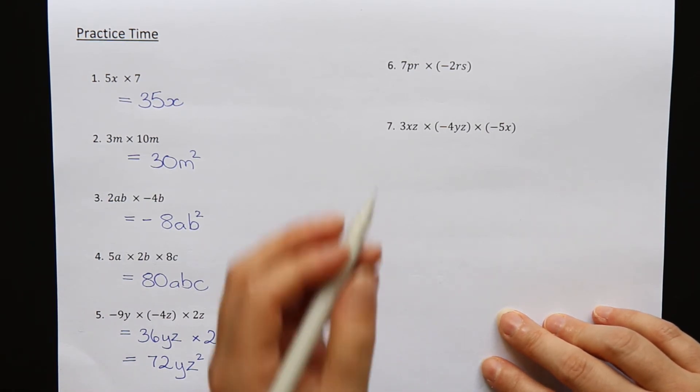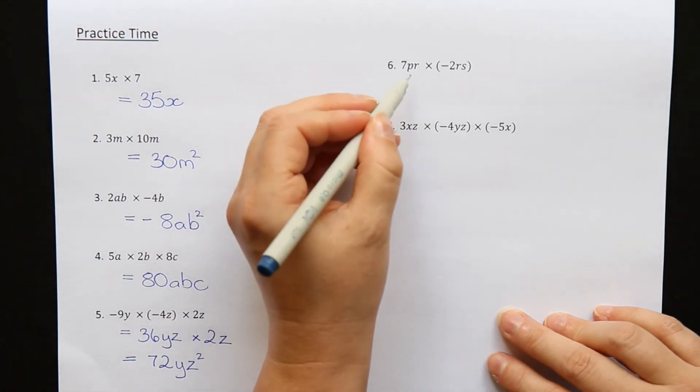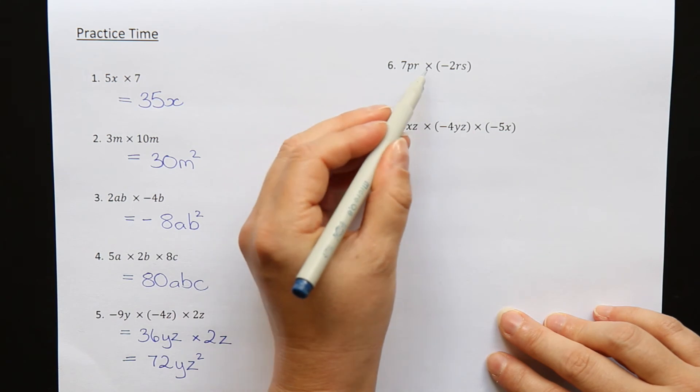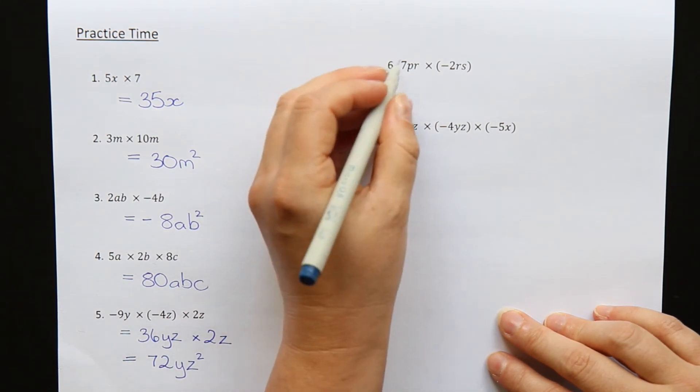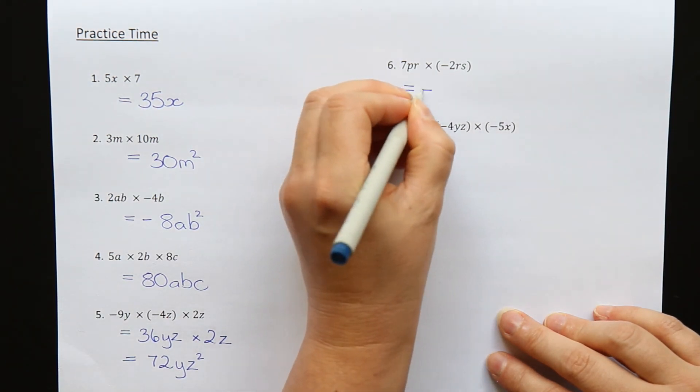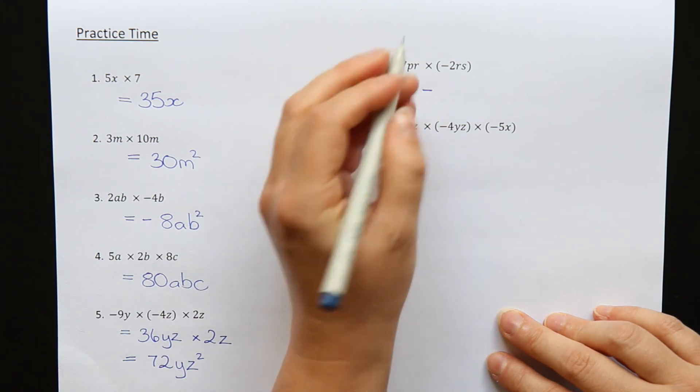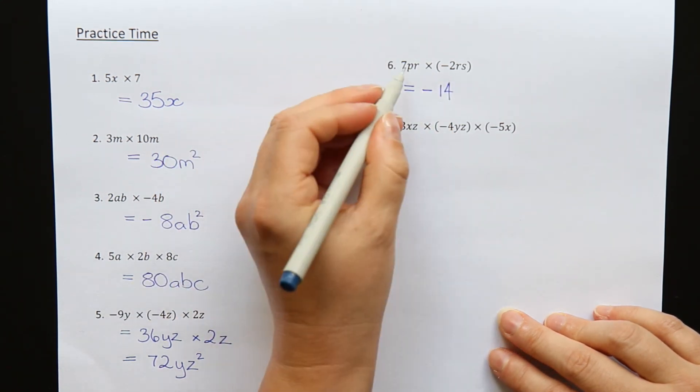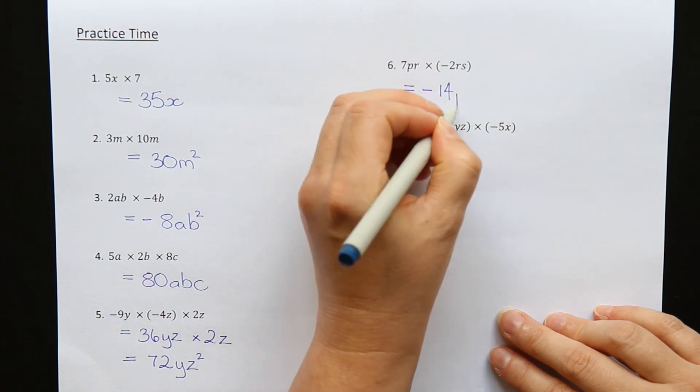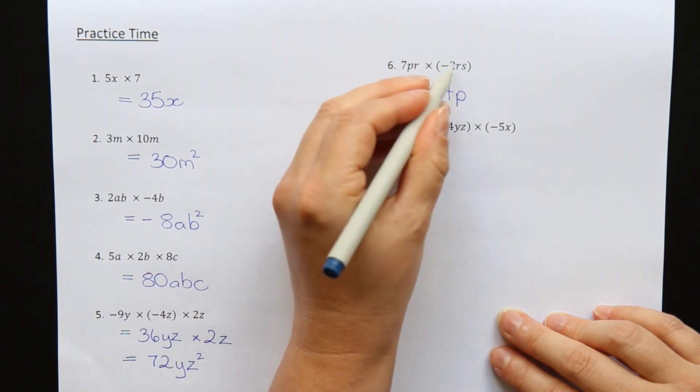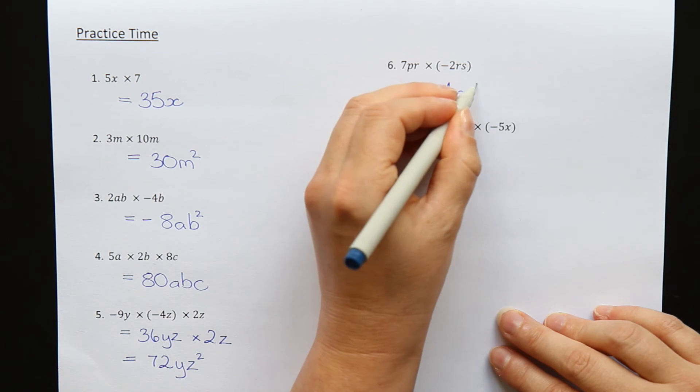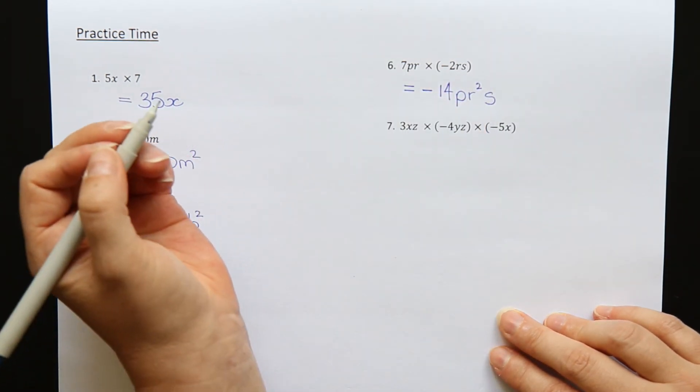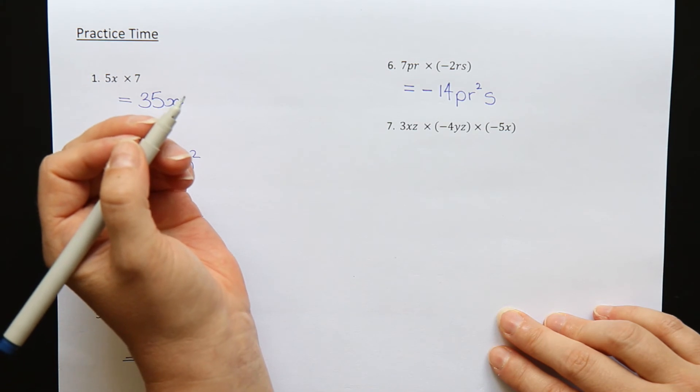Question 6: 7pr times minus 2rs. 7 times minus 2—a positive and a negative makes a negative. 7 times 2 is 14. There's a p, an r and another r, so that becomes r squared, and 1s. My answer is minus 14pr squared s.